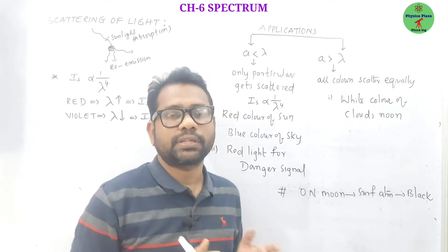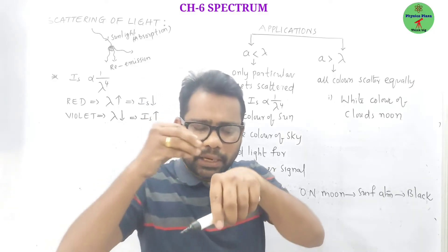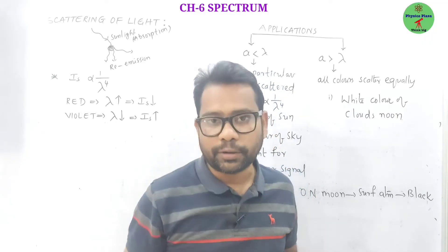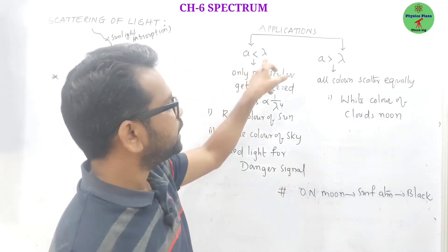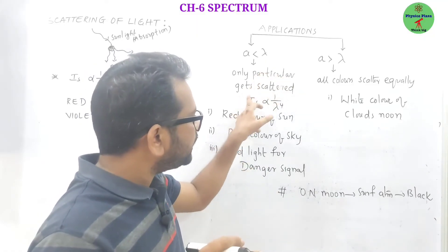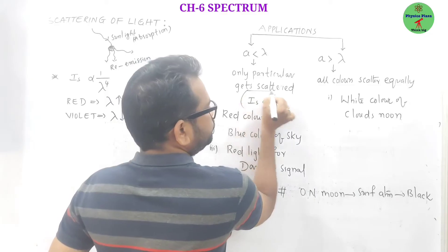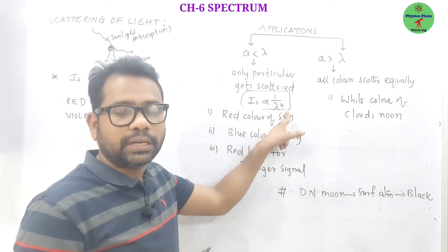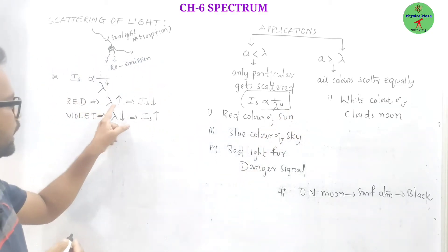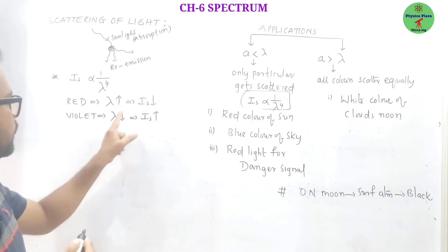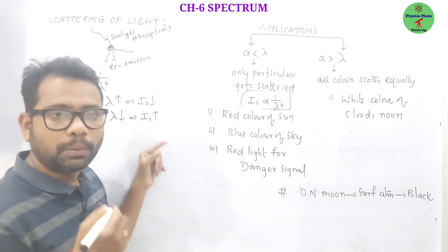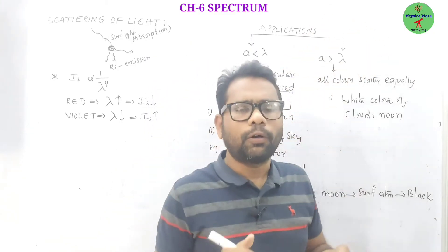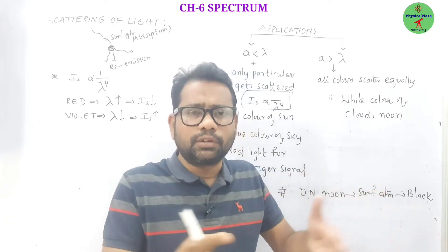The size of the particle on which light is incident — the so-called scatterer size — is very important. If the scatterer size is less than the wavelength of the incident light, then only Rayleigh scattering is obeyed: scattering intensity is inversely proportional to the fourth power of the wavelength. More the wavelength, less is the intensity of scattering; less the wavelength, more is the intensity of scattering. But if the size of the scatterer is more than the wavelength, then all colors will get scattered to the same extent.